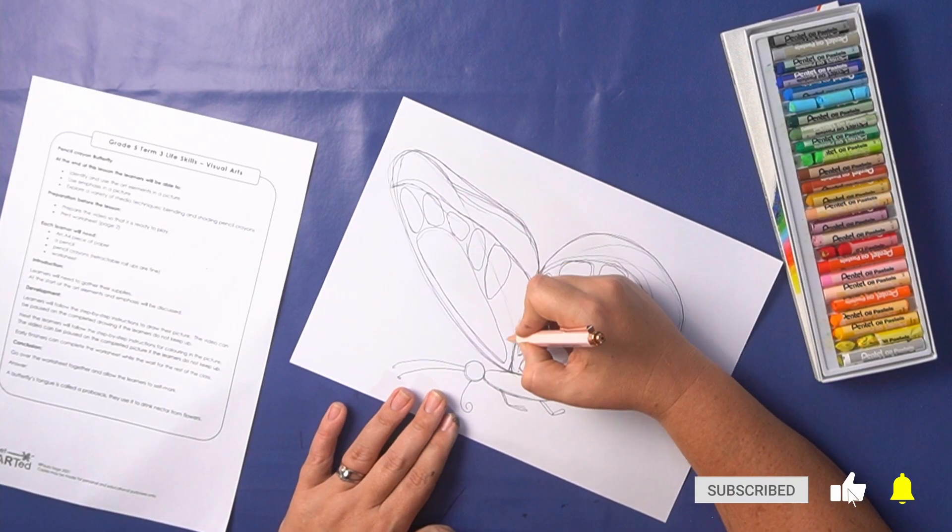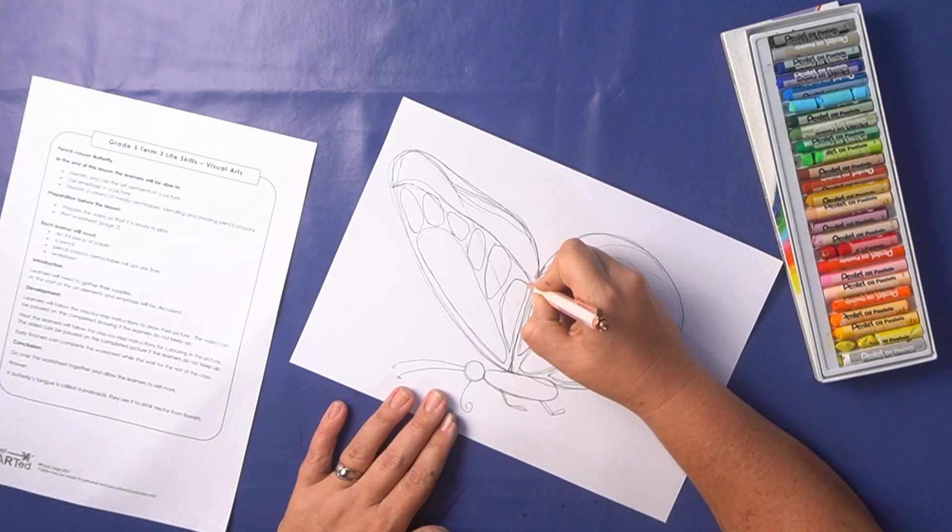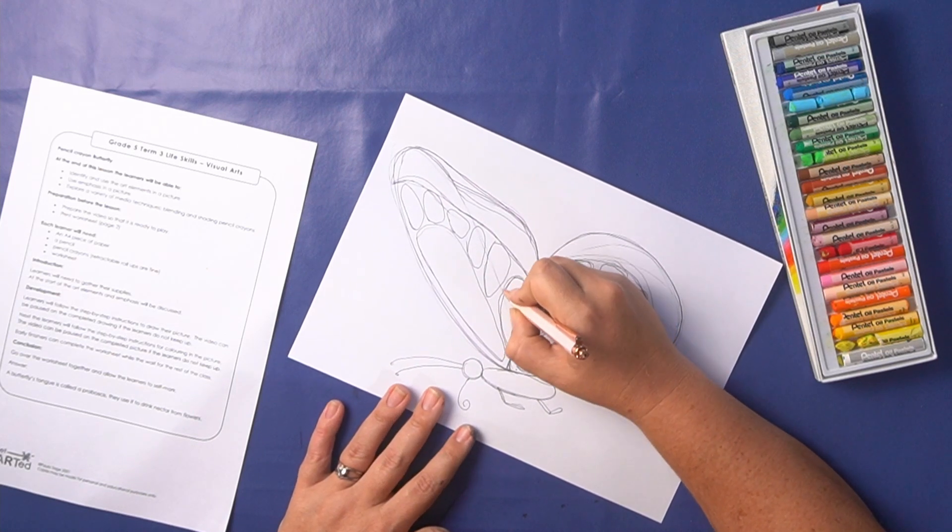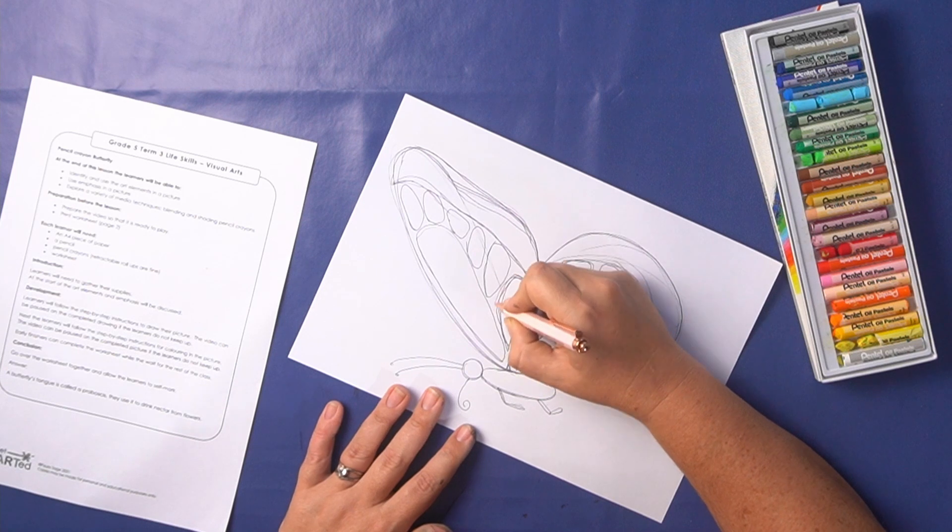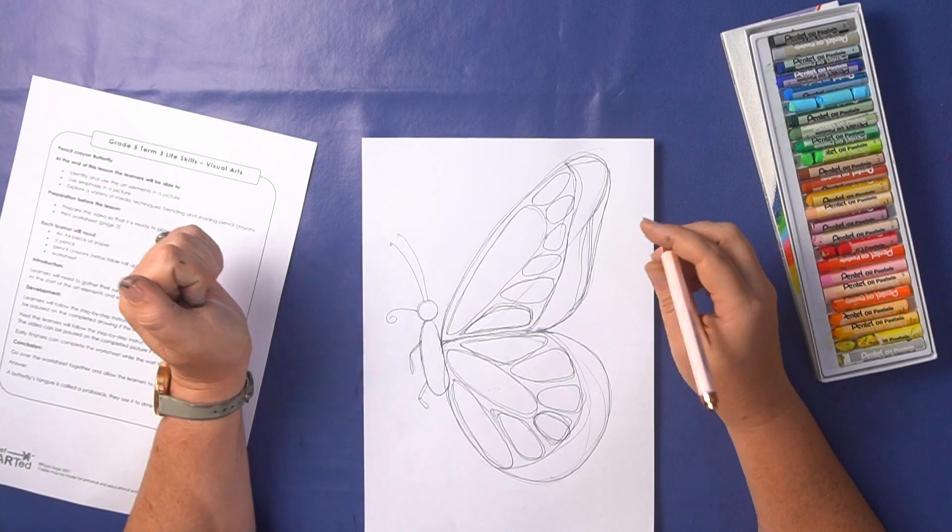They're going to get slightly bigger as you get to the bottom and then the last one again is going to be quite large and probably not a perfectly oval shape. Just use the space that's left. Okay so now we have the plan for our butterfly we can start coloring it in.